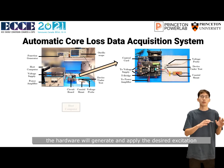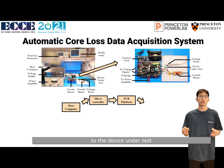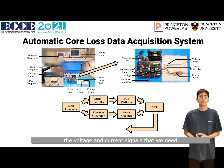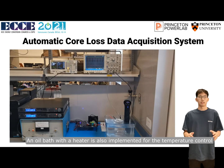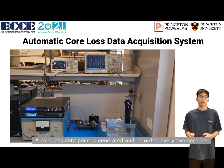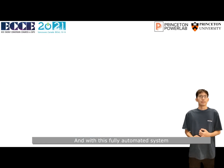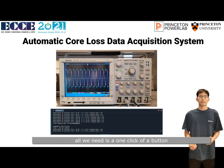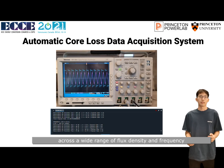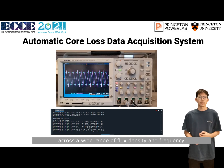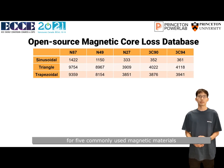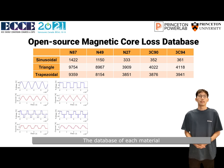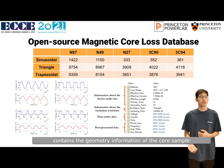With the control of the host computer, the hardware will generate and apply the desired excitation to the device under test. The oscilloscope will measure and collect the voltage and current signals that we need. An oil bath with a heater is also implemented for temperature control. A core loss data point is generated and recorded every 2 seconds. With this fully automated system, all we need is just a click of a button, and thousands of data points will be acquired in a few hours, across a wide range of flux density and frequency. So far, we have collected over 60,000 core loss data points for 5 commonly used magnetic materials with multiple types of waveforms.